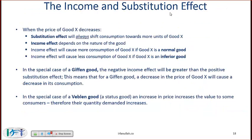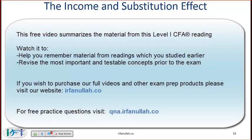When the price of good X decreases, we have both a substitution effect and an income effect. The substitution effect will always shift consumption towards more units of X. The income effect depends on the nature of the good — if the price of a good decreases, in real terms you have more buying power, more income, and the impact of that higher real income is called the income effect.